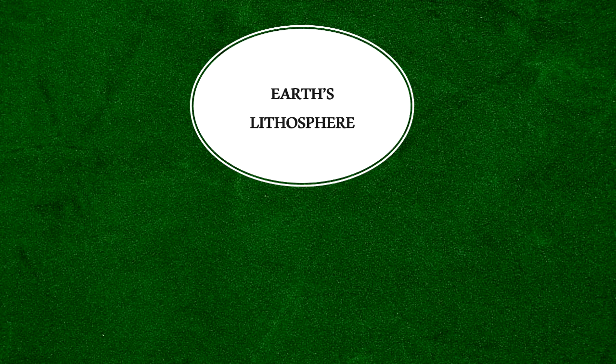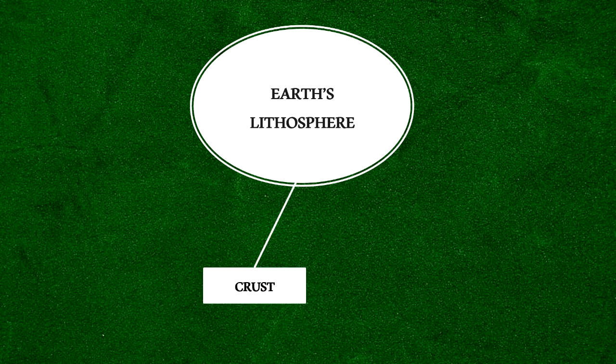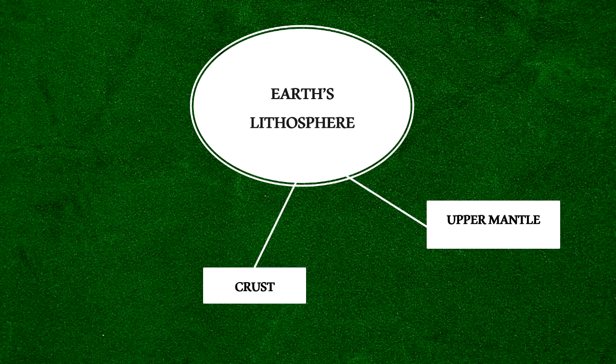Now let's define first the lithosphere. The Earth's lithosphere is a solid outer layer consisting of the crust and the upper part of the mantle.